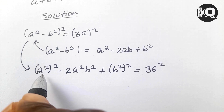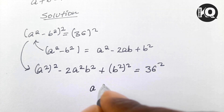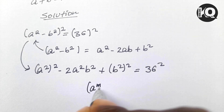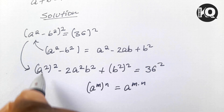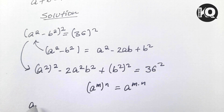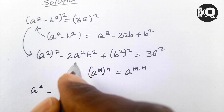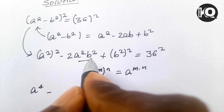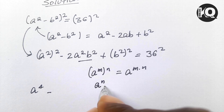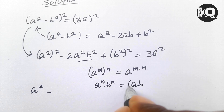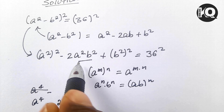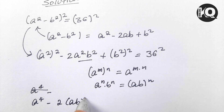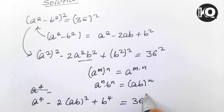Now, from the property of exponents, (aᵐ)ⁿ = aᵐⁿ. Applying this, (a²)² becomes a⁴. Also, aⁿ·bⁿ = (ab)ⁿ, so a²b² = (ab)². Therefore we have a⁴ - 2(ab)² + b⁴ = 36².